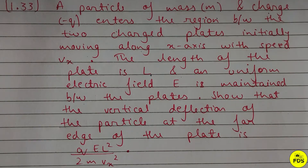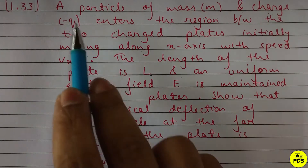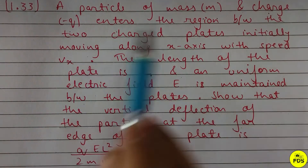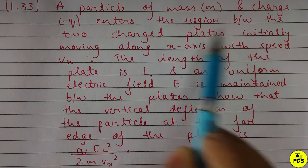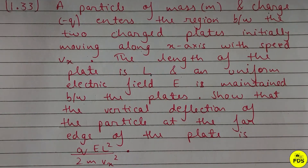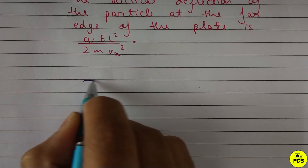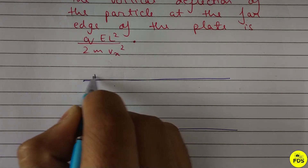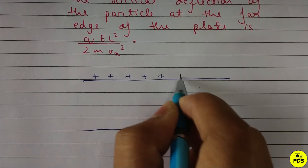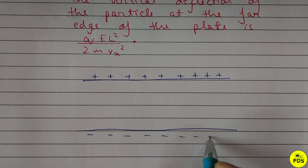Let's make a diagram. Here we have two charged plates — this one is positively charged and this one is negatively charged.